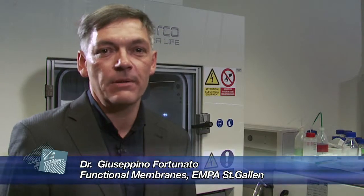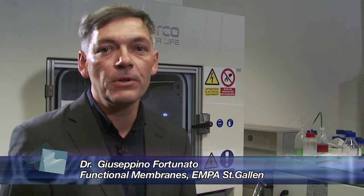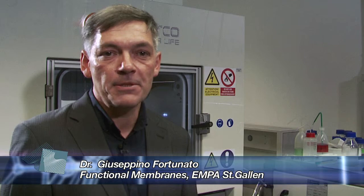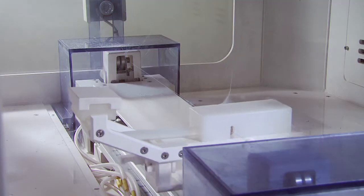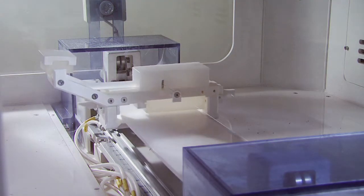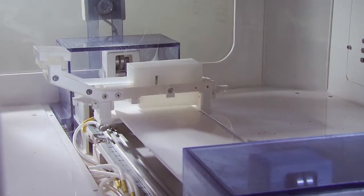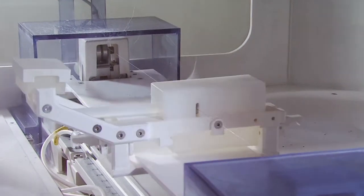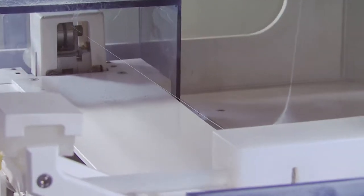Emulsion electrospinning allows the fabrication of nanofibers with tunable morphologies in an upscalable way. At EMPA we have installed a pilot scale electrospinning plant as produced by El Marco. This will allow us to produce such intelligent membranes at the larger scale.